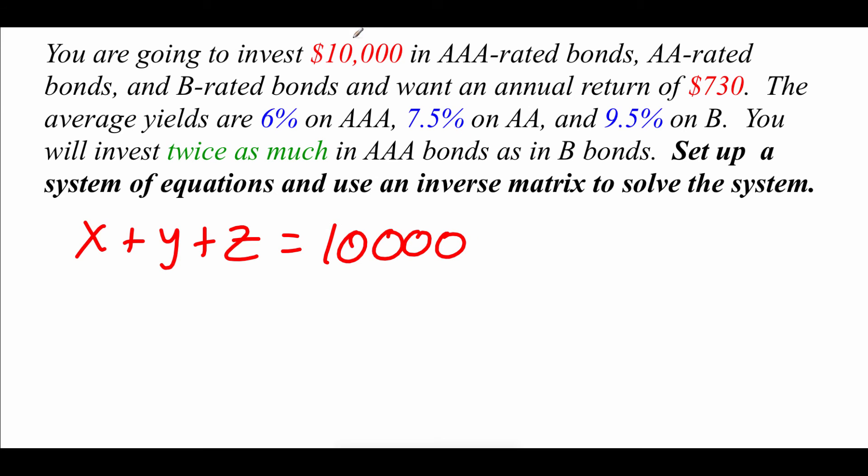Now the second part is dealing with interest. It says we get six percent on our AAA bonds, and let's just say that X is our AAA bonds. So as a decimal, we'd write this out 0.06 times our X plus, looks like we get seven and a half percent on our AA's, so maybe that'll be our Y. So 0.075Y, plus we get nine and a half on our B, so 0.095Z equals, we want $730 in interest.